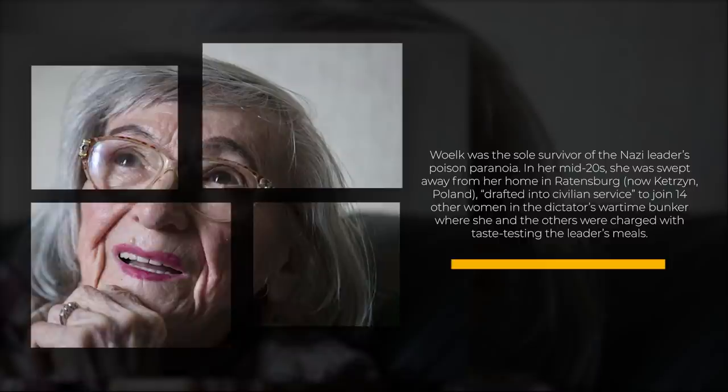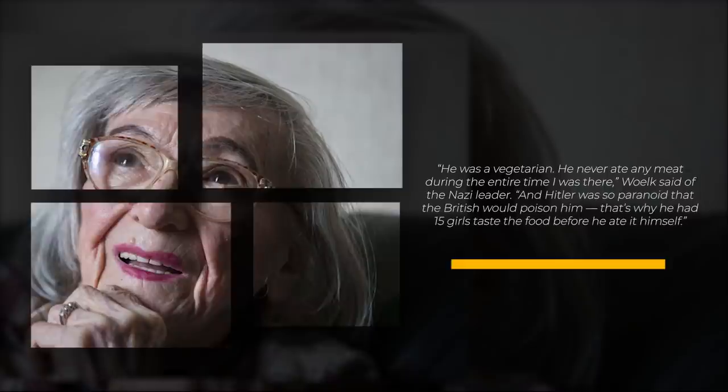In her mid-20s, she was swept away from her home in Ratensburg, now Kętrzyn, Poland, drafted into civilian service to join 14 other women in the dictator's wartime bunker where she and the others were charged with taste testing the leader's meals. As the war dragged on, food supplies in much of German-occupied territory suffered. Within the Wolf's Lair, however, the food was delicious. Only the best vegetables, asparagus, bell peppers, everything you can imagine, and always with the side of rice or pasta, said Wölk. He was a vegetarian.